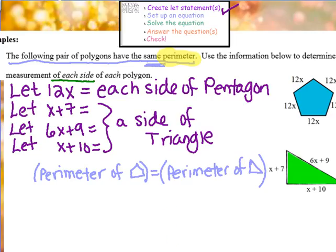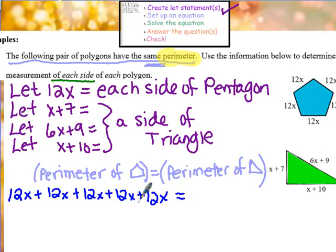Remember that the word perimeter means that you are going to add up all the sides in each figure. So first, to find the perimeter of the pentagon, we are going to add up 12x five times. Bring down the equal sign. The perimeter of the triangle, we have those three sides over there so I'm going to bring down each of those three sides, adding them up: x plus 7 plus 6x plus 9 plus x plus 10. So step two, set up your equation, is done.